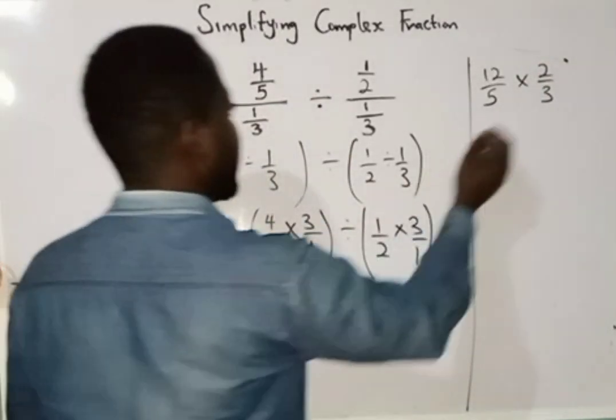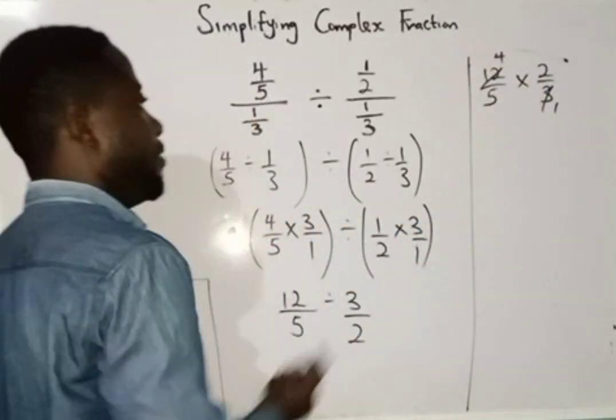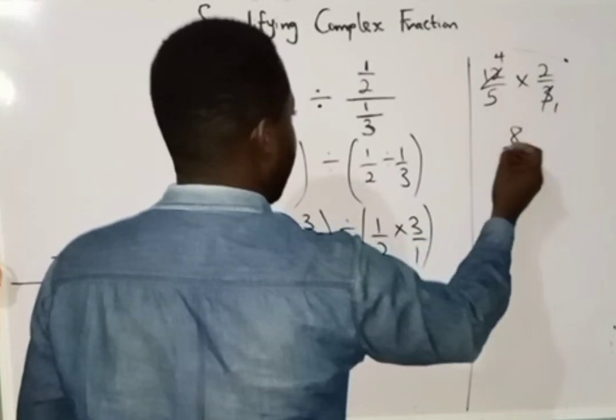Then I can cancel: 3 here becomes 1, 3 here becomes 1. Then I will be having 4 multiplied by 2 equals 8, and 5 times 1 equals 5.